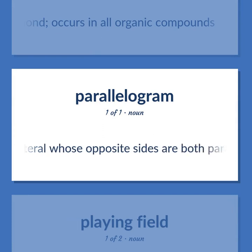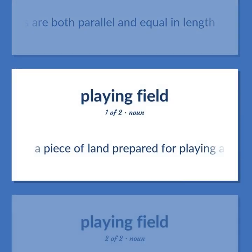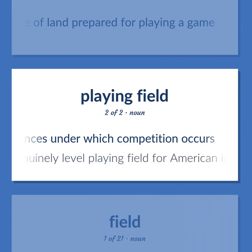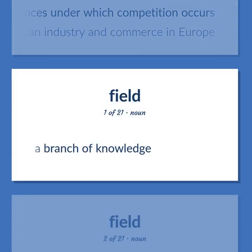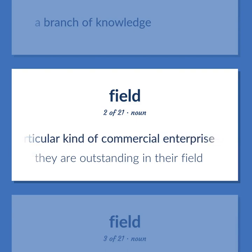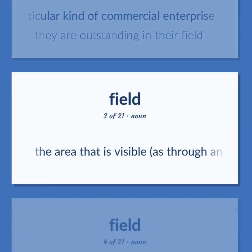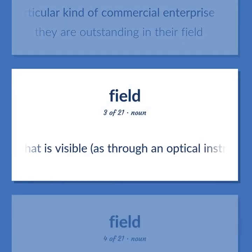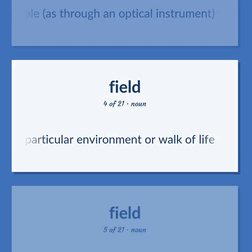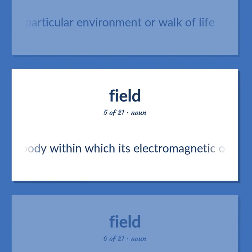Field. A quadrilateral whose opposite sides are both parallel and equal in length. A piece of land prepared for playing a game. The circumstances under which competition occurs. The government's objective is to ensure a genuinely level playing field for American industry and commerce in Europe. A branch of knowledge. A particular kind of commercial enterprise. They are outstanding in their field. The area that is visible, as through an optical instrument. A particular environment or walk of life. The space around a radiating body within which its electromagnetic oscillations can exert force on another similar body not in contact with it.